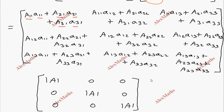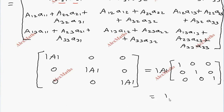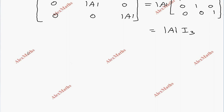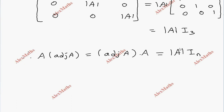So this is the value determinant A into I₃. Therefore, A into adjoint A is equal to adjoint A into A, which is equal to determinant A into Iₙ. We can prove that for the general case, I₃ equals Iₙ, so determinant A into Iₙ. Theorem 1.1 is proved.